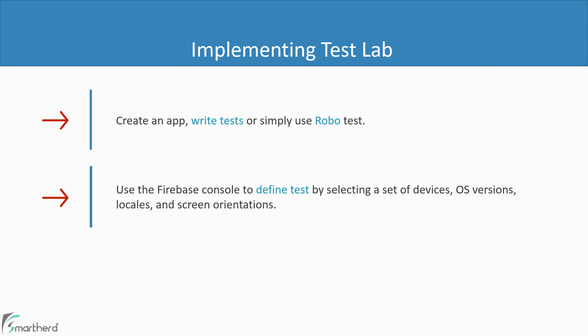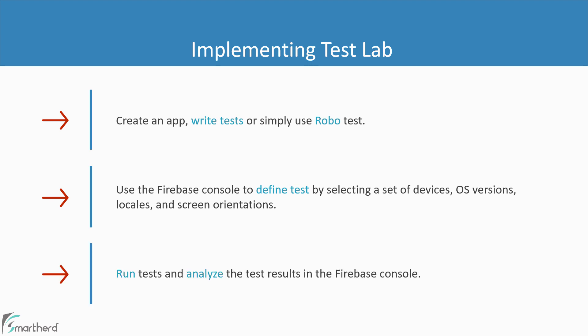All of this is possible by just following three simple steps. The first step is to create your application and write test cases. Since writing instrumentation tests is time-consuming, you can instead run the robot test, which automates the testing process — so you don't have to write a single line of code for that. Next, in your Firebase console, you can define your test — select which devices to test on, the OS version, locales, and even the screen orientation. Once you decide your testing scenarios, the next step is to run the test and analyze the results.